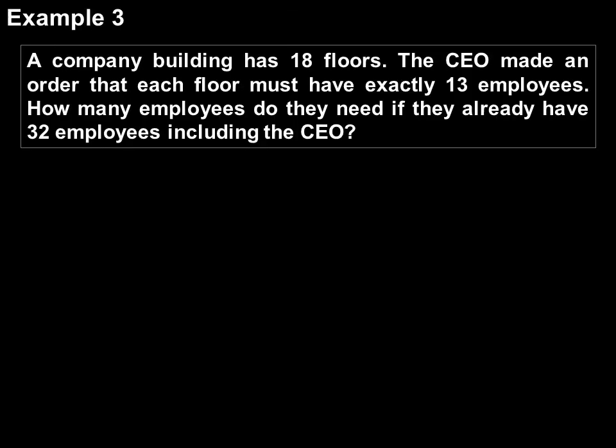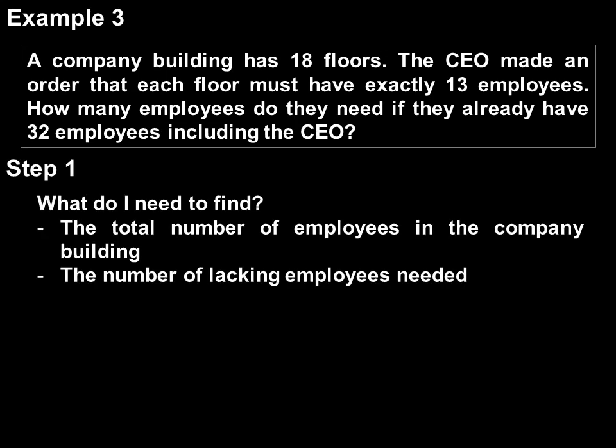Example number 3. A company building has 18 floors. The CEO made an order that each floor must have exactly 13 employees. How many employees do they need if they already have 32 employees, including the CEO? Find the total number of employees in the company building and the number of lacking employees needed.